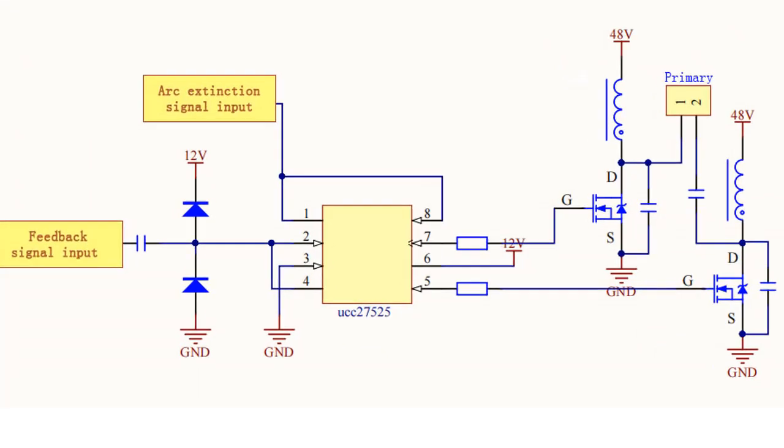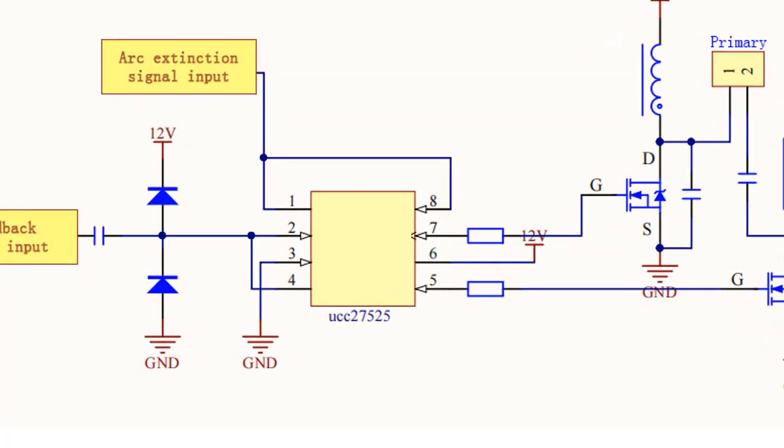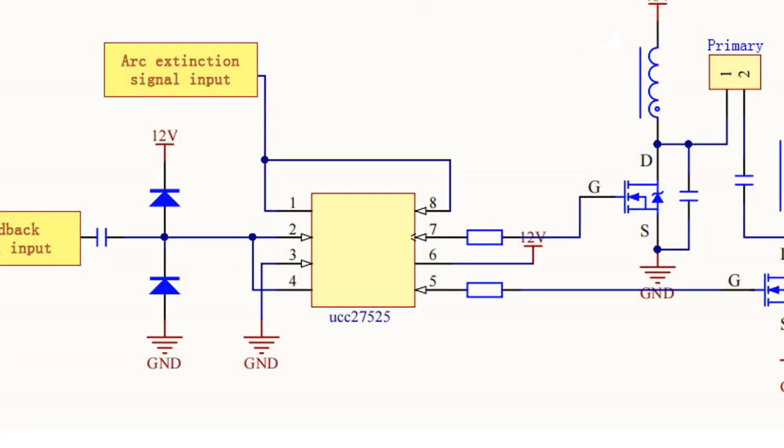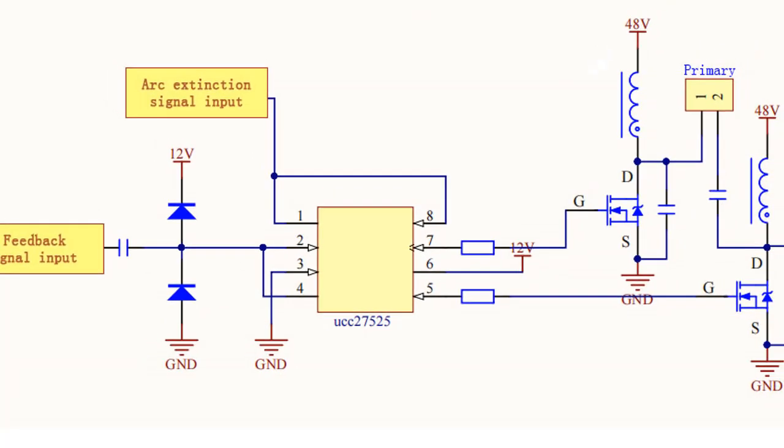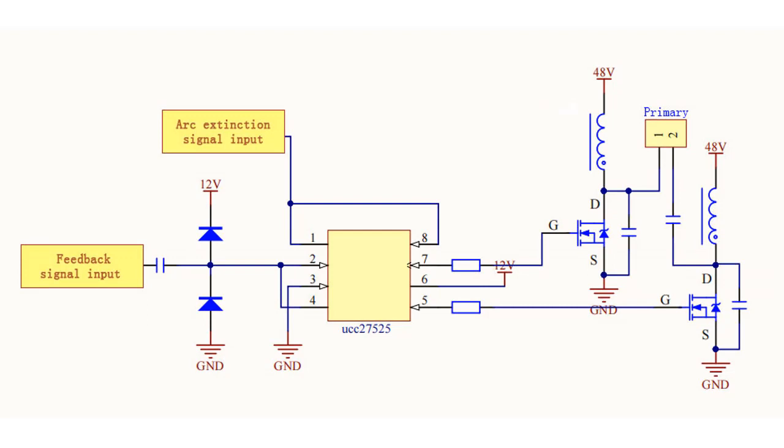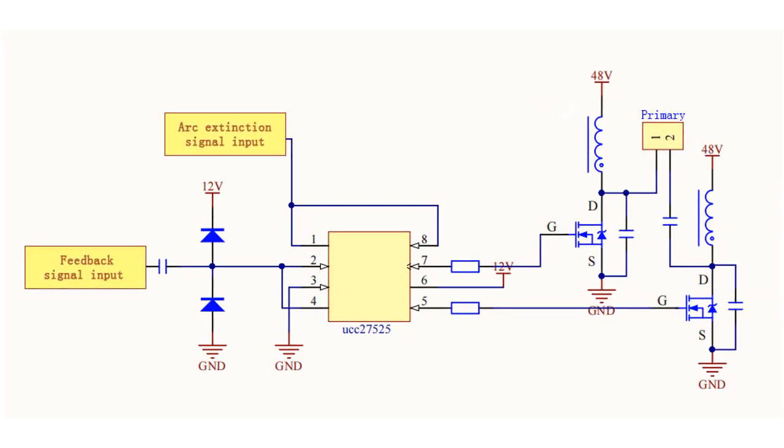When current flows through the primary coil, it creates an oscillating magnetic field. This field causes current to flow through the secondary coil, creating high voltage, low current electricity. The Tesla coil can also be used to create sparks.